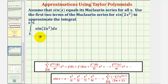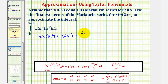So sine two x squared would be equal to: instead of x, we would have two x squared, minus, instead of x cubed divided by three factorial, we'd have two x squared cubed divided by three factorial. Notice here we have the first two non-zero terms of the Maclaurin series, and therefore we would use these two terms to approximate this integral.